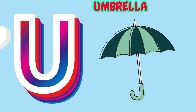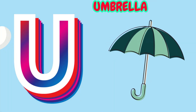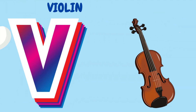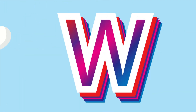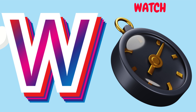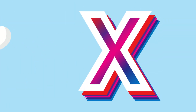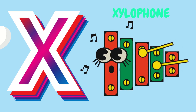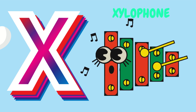U is for Umbrella. U-U-Umbrella. V is for Violin. V-V-Violin. W is for Watch. W-W-Watch. X is for Xylophone. X-X-Xylophone.